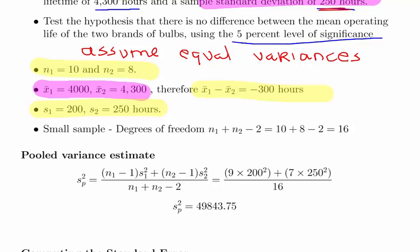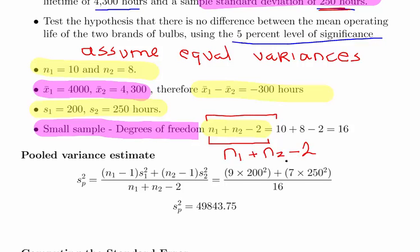And what we have here is a small aggregate sample size that n1 plus n2 is less than 30. So essentially in this case the degrees of freedom n1 plus n2 minus 2 is our degrees of freedom there. So it's minus 1 for each sample. That's the degrees of freedom there. n1 plus n2 minus 2, that's a minus 1 for each sample size. And that works out to be 16.